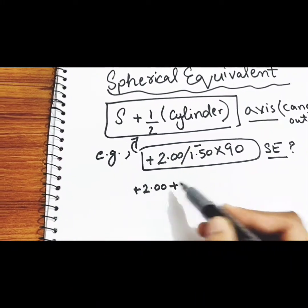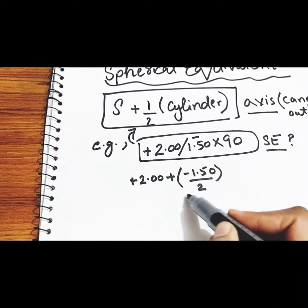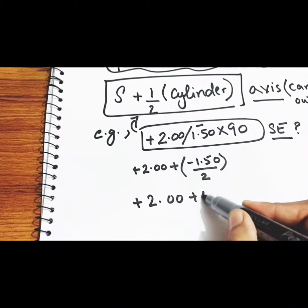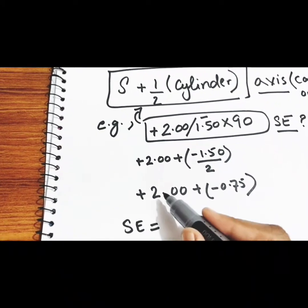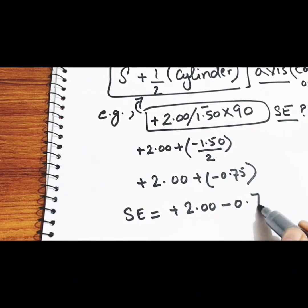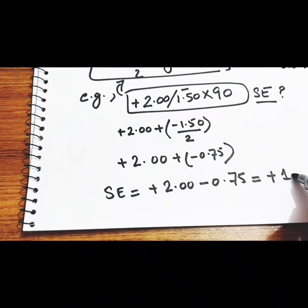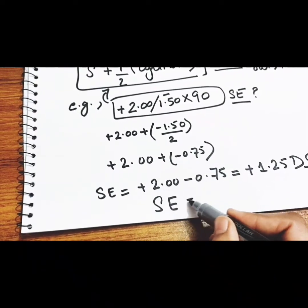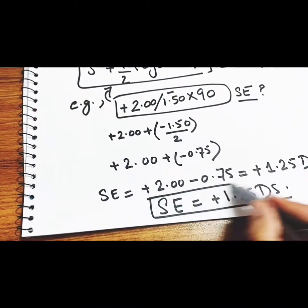Applying the formula: plus two plus (minus 1.50 divided by two). This becomes plus two plus (minus 0.75). So the spherical equivalent is plus two minus 0.75. We algebraically multiply — plus with minus gives minus — so plus two minus 0.75 gives a spherical equivalent equal to plus 1.25 diopters.